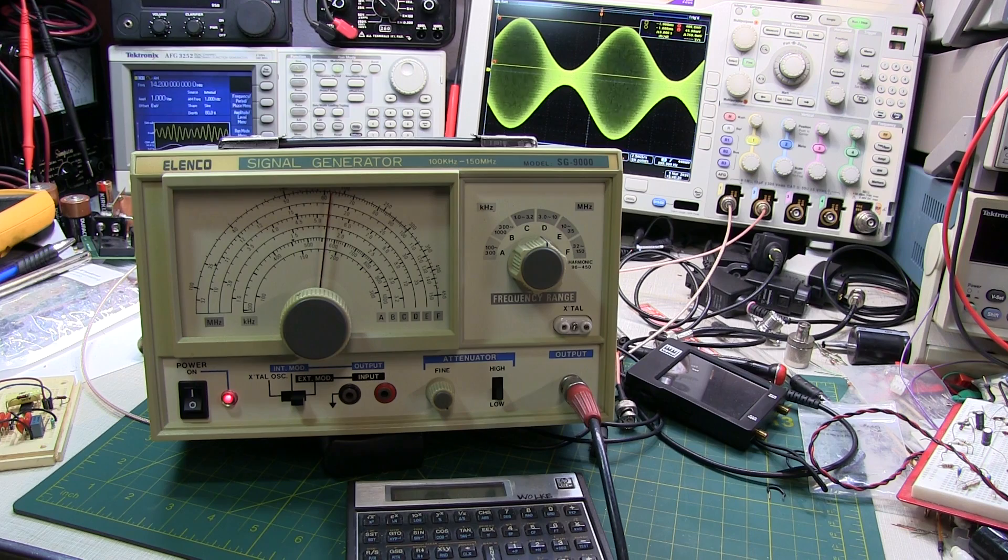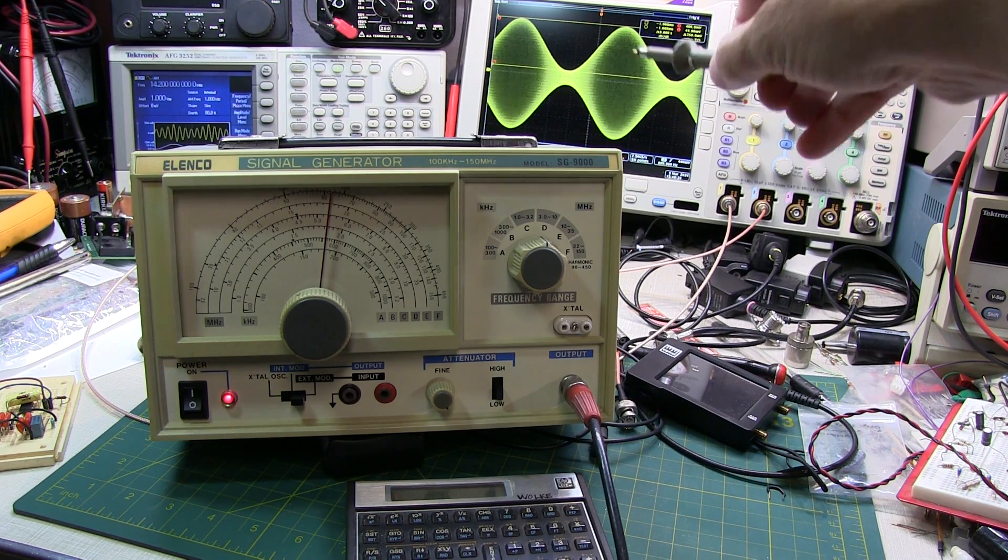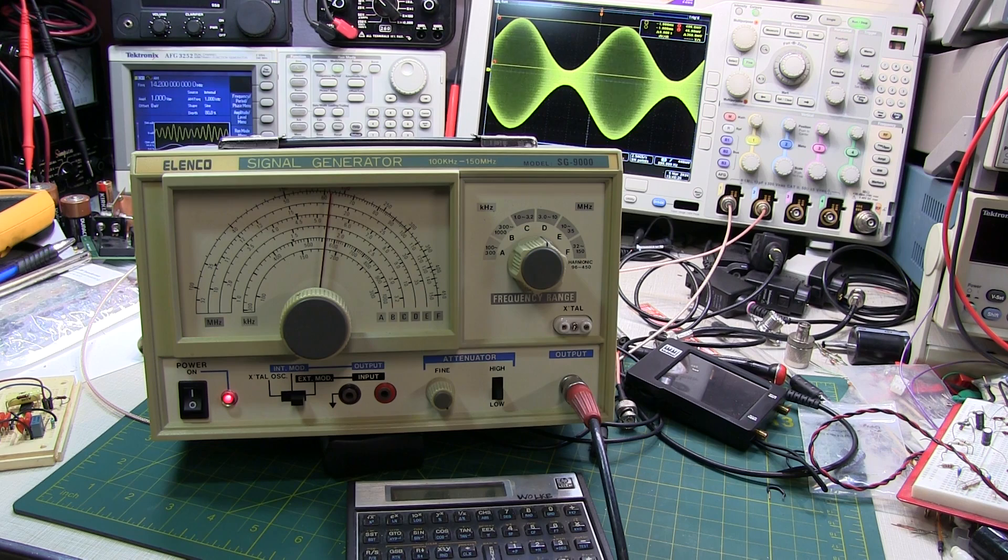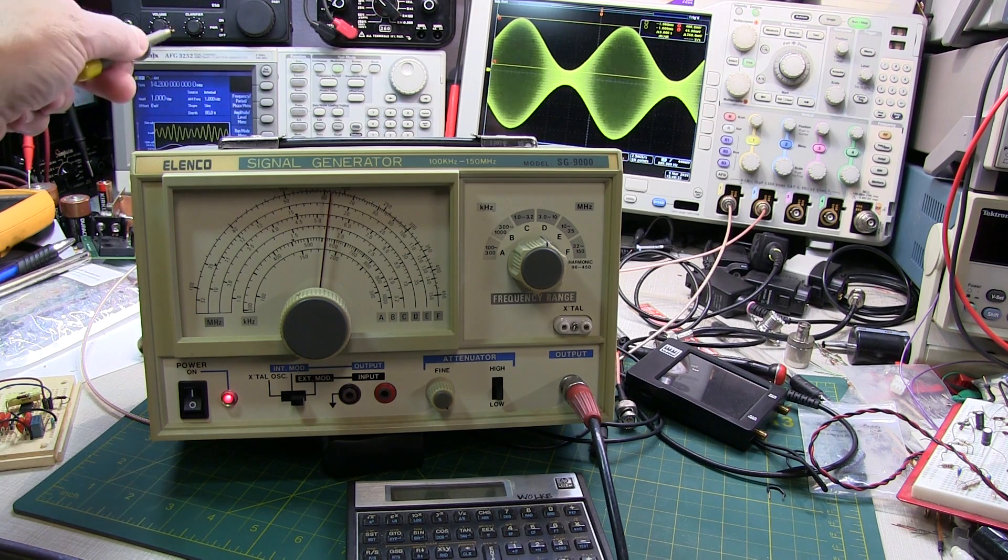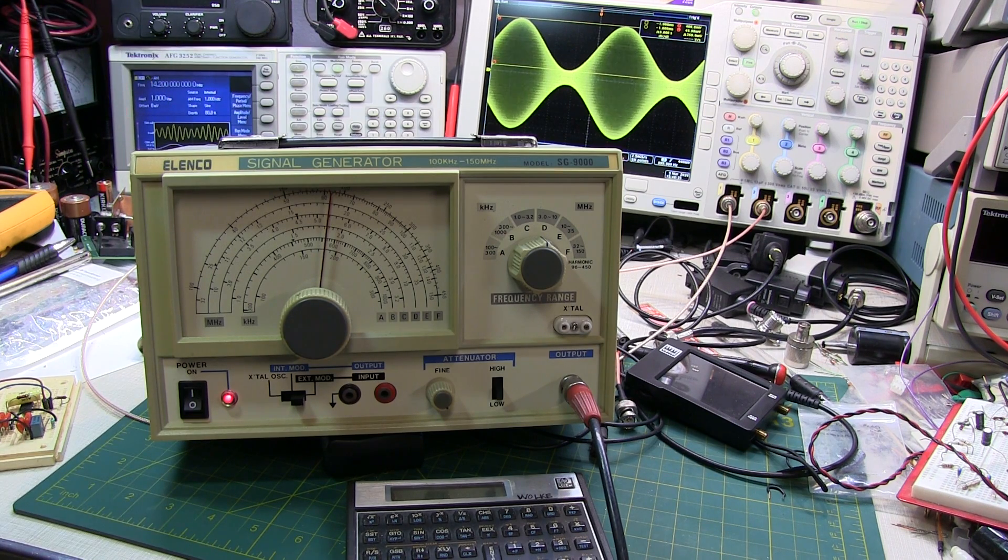Now a couple of comments that I had on that video said, well okay, not all of us have a nice fancy digital scope, so can we make that measurement with an analog scope? And can we also do it with something other than a nice fancy function generator like I've got back there? Maybe something more similar to what most hobbyists might have in their lab from an RF signal generator.